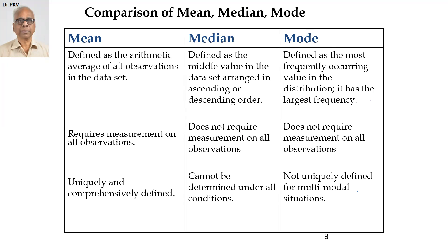Arithmetic mean requires measurements on all observations — it is based on all observations. Median does not require measurement on all observations because it is the middle value; the top 50% is omitted, the bottom 50% is omitted, and the middle value is selected. Mode also does not require measurements on all observations. Arithmetic mean is uniquely defined — I get a single value because it is based on all observations, so I have one mean value.